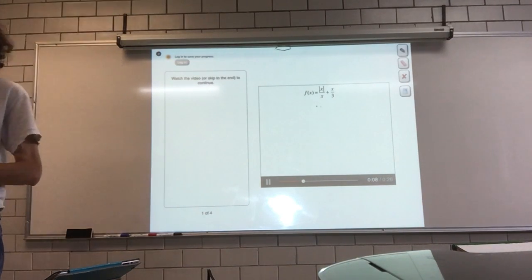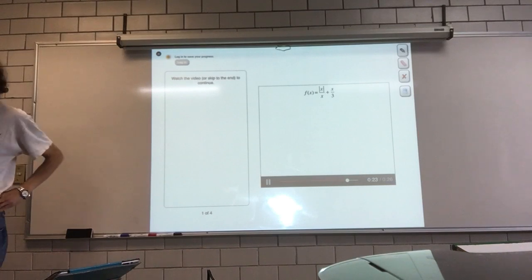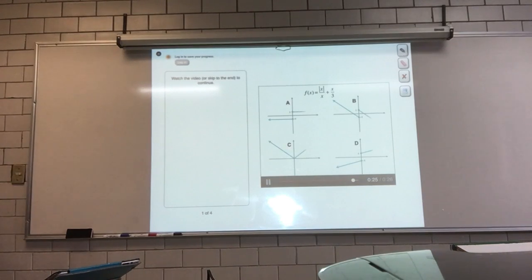Let's start by thinking about this function here. The absolute value of x over x, plus x over 3. The absolute value is a function that ignores minus signs. So the absolute value of minus 4 is positive 4, while the absolute value of 2 is still 2. Can you figure out which of these is the correct graph for this function?